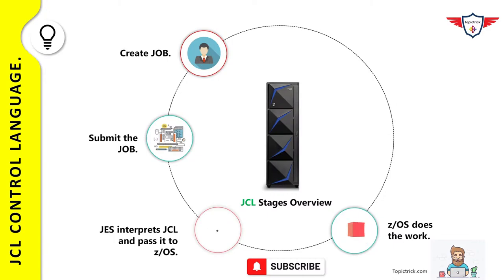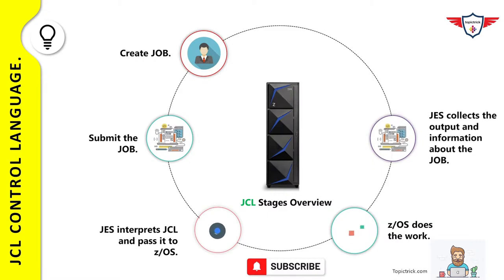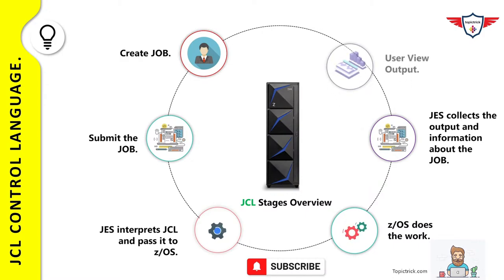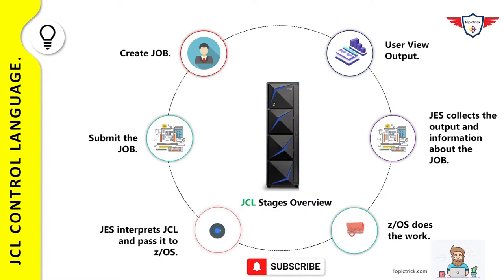In the processing stage, ZOS executes the job. The initiators examine the JES pool, select an appropriate job for execution, execute the job in its address space, and return the resources for another job. In the output phase, once the job is completed, JES2 collects the output and sends it to print based on output class and device setup. In the last phase, the user can view the output in a spool. The output can be a report, a new dataset, or a database update depending on the business requirement. In this example, the monthly tax report will be available in spool.